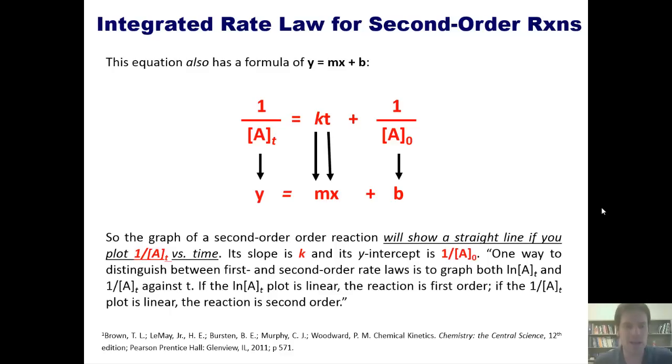According to our book, one way to distinguish between a first and second order rate law is to graph both ln of A and 1 over A against T. If the ln of A plot is linear, then the reaction is first order. If the 1 over A plot is linear, then the reaction is second order. So that's really the distinction. When you look at a graph of these, you have to look at what is plotted on the Y-axis. If it's ln of A, then it's a first order reaction. If it's 1 over A, then it's second order. Got it? Good. Let's look at a question.